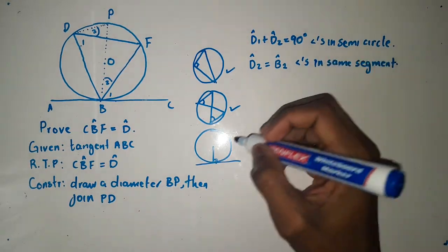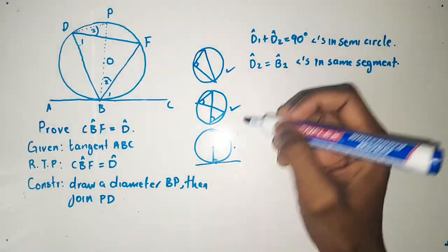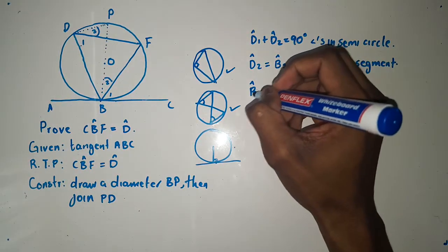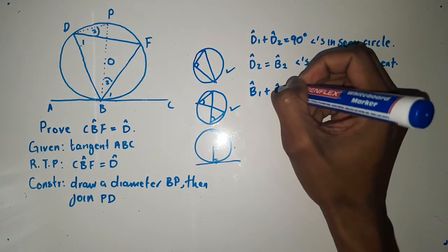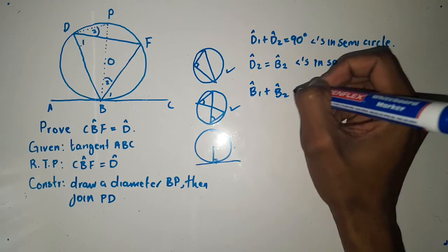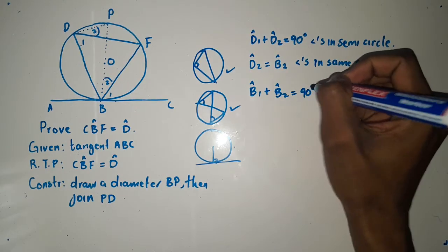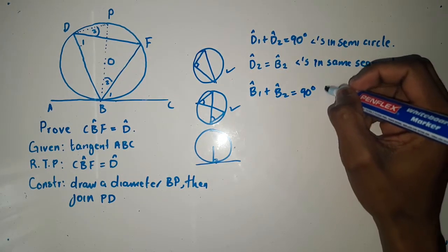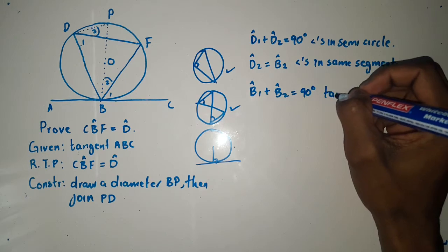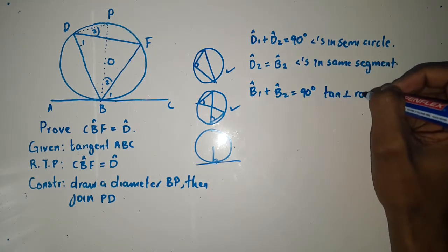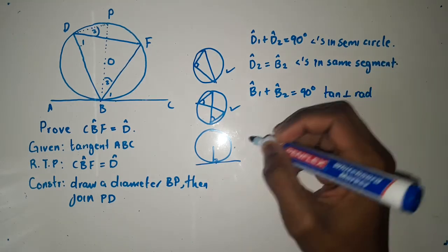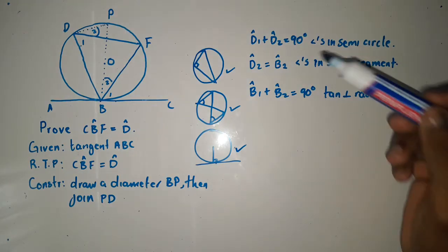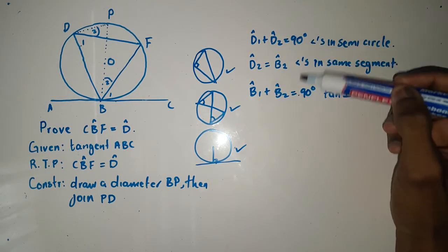For the third theorem, angle B1 plus angle B2 equals 90 degrees. The reason for this is that the tangent is perpendicular to the radius.